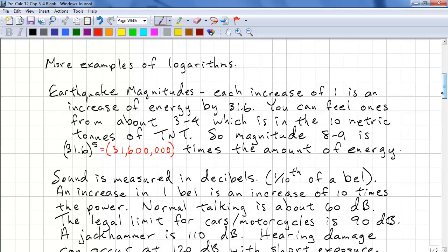Each increase of 1 on the magnitude scale is an increase of 31.6 times the amount of energy. You can feel earthquakes that have a magnitude between 3 and 4, which is roughly 10 metric tons of TNT, otherwise known as dynamite. A magnitude 8 to 9 earthquake is 5 more than a magnitude 3 to 4 earthquake, so this is 31.6 to the power of 5, or roughly 31 million times the amount of energy of a magnitude 3 to 4 earthquake.